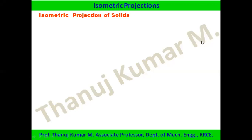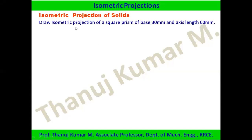Today's class will cover isometric projection of solids. The problem is: draw the isometric projection of a square prism of base 30 mm and axis length 60 mm.